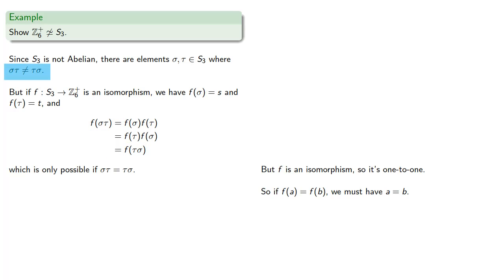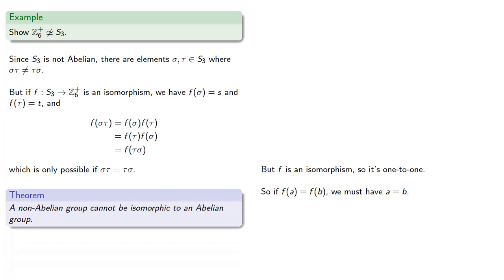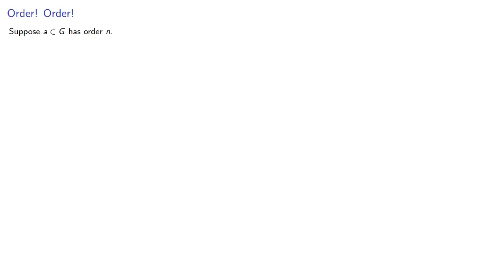And so the two groups cannot be isomorphic. More generally, what this says is that a non-abelian group cannot be isomorphic to an abelian group. We also saw that if A in G has order n and F from G to H is an isomorphism, then F of A in H must also have order n.